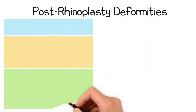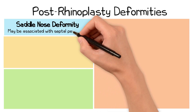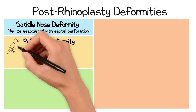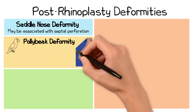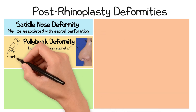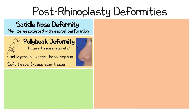What are some of the most common post-rhinoplasty deformities? A saddle nose deformity, which we have spoken about before, may also be associated with a septal perforation after surgery. A polybeak deformity refers to the appearance of a parrot's beak. This is due to excess tissue in the supratip and can be cartilaginous in nature — a so-called cartilaginous polybeak from excess dorsal septum left behind in the supratip — or a soft tissue polybeak, characterised by excess scar tissue following surgery.